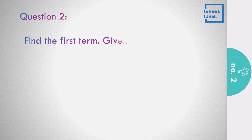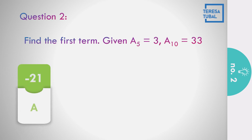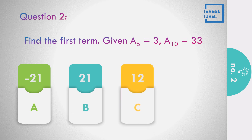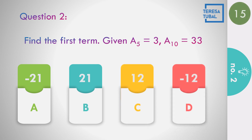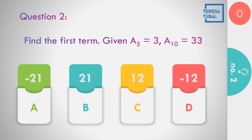Question number 2: Find the first term given that the fifth term equals 3 and the tenth term equals 33. Options: a) negative 21, b) 21, c) 12, d) negative 12. Time's up. The answer is equal to negative 21.